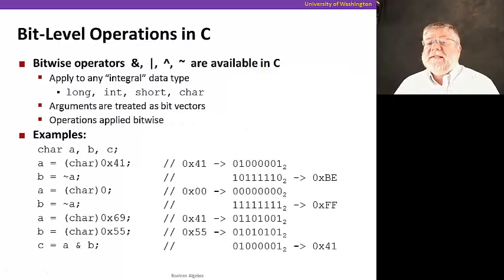And in C, we have these exact same operators available to us. And in C, we can apply to any integral data type, long, int, short, or character. I remember character being just a byte. And the arguments to these operators up here are treated as bit vectors. And the operations apply bitwise.